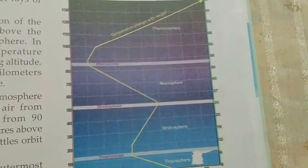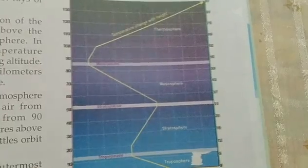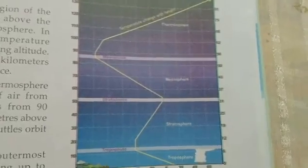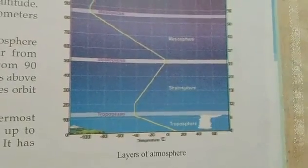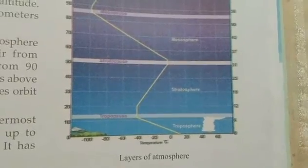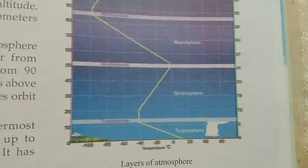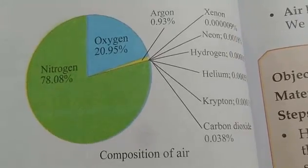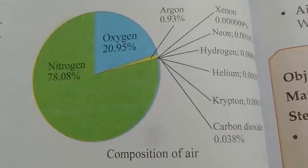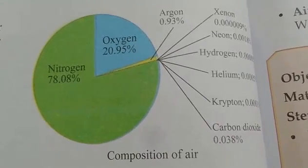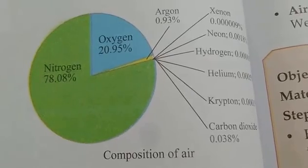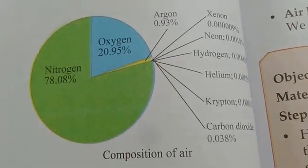We learnt about the importance of air. Air is the prime reason for existence of life on earth. The ozone layer present in the atmosphere protects our earth from the harmful UV rays of the sun. Air is a mixture of several gases, consisting of 78% nitrogen, 21% oxygen, and 1% carbon dioxide and other gases.